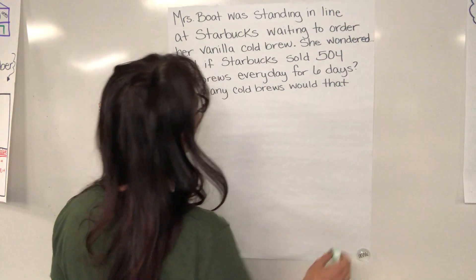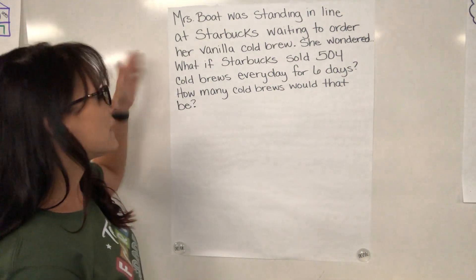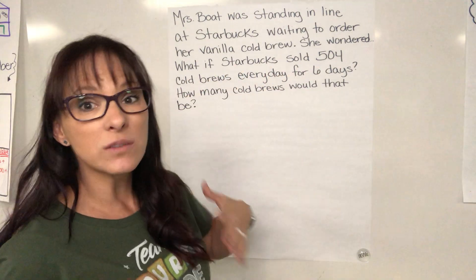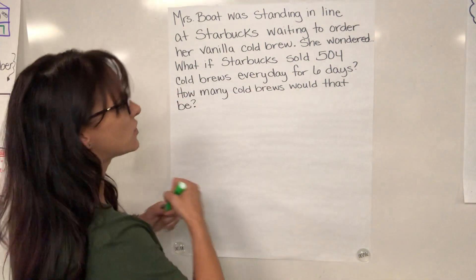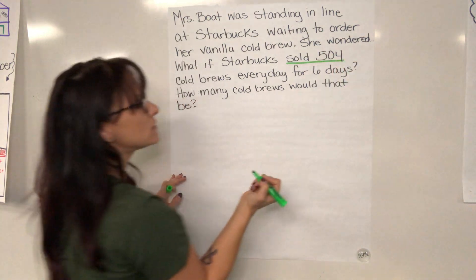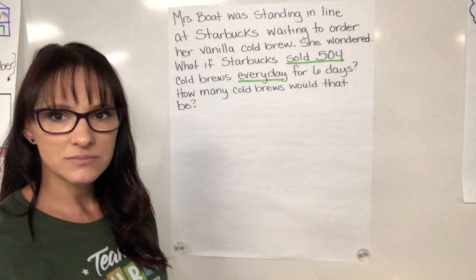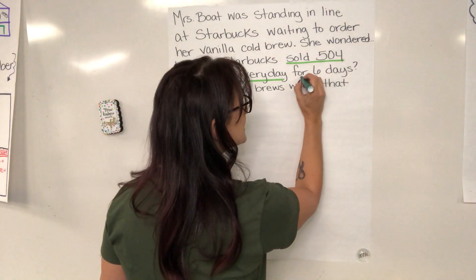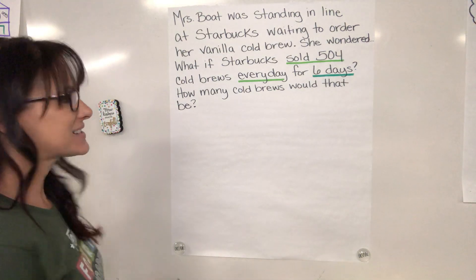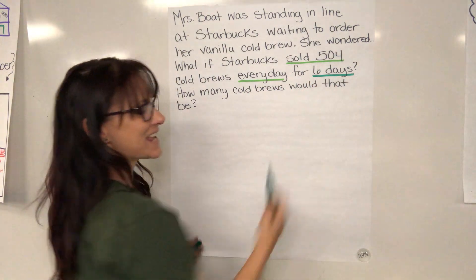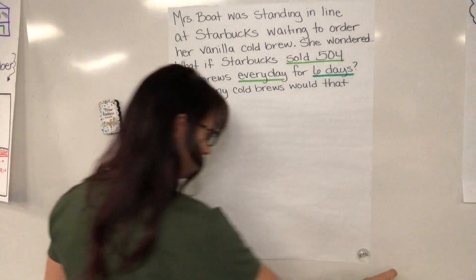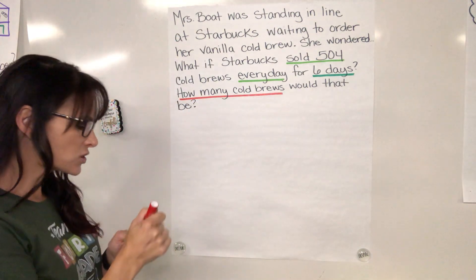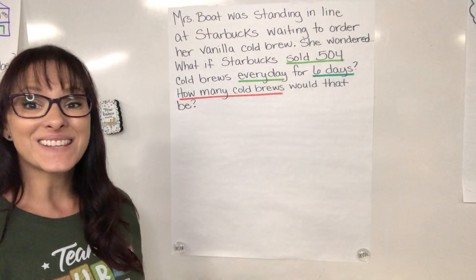Let's talk about what we need to know. We do know in the question, I'm wondering, what if Starbucks sold 504 cold brews every day? Underline sold 504 every day. And how many days did they do that? They did it for six days. Underline six days. So 504 every day for six days. And then the final question is asking how many cold brews would that be? I'm looking for the total number of cold brews every day for six days.